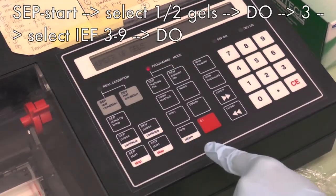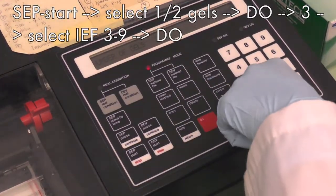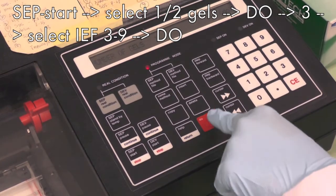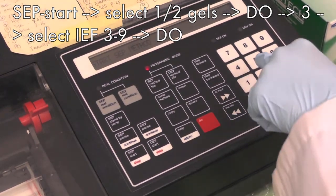Press set start, then 1 or 2 gels, then press do, and then press 3. Select IEF 3-9 and press do.